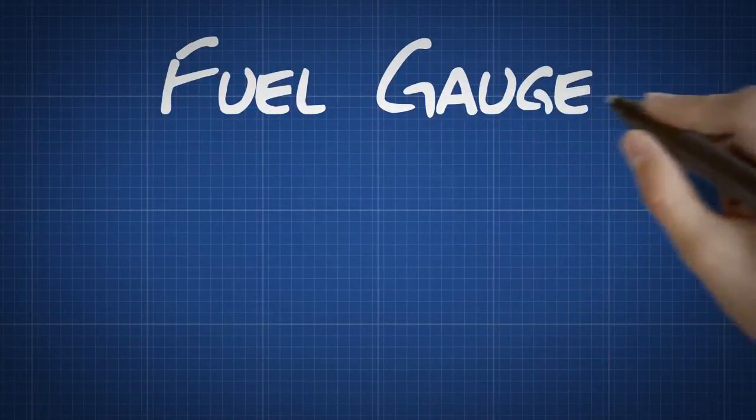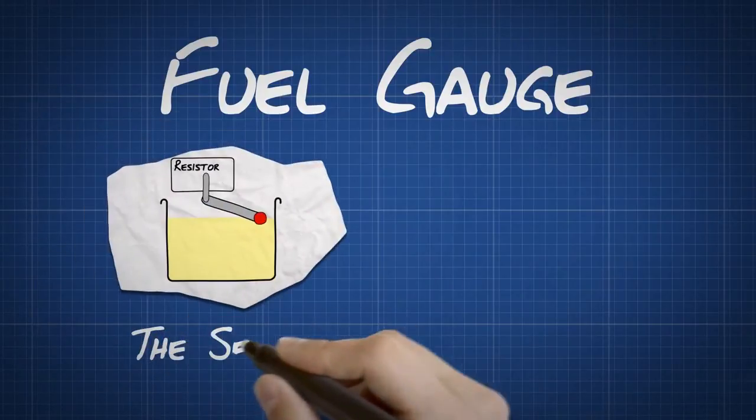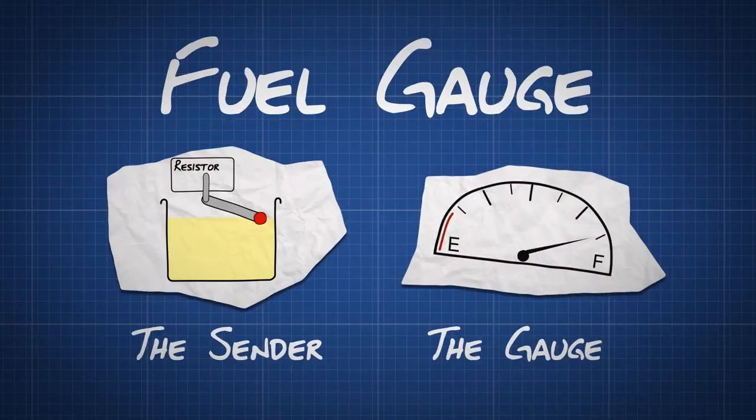How does a fuel gauge work? There are two main parts to a fuel gauge: the sender, which measures the level of fuel in the tank, and the gauge, which displays that level to the driver.